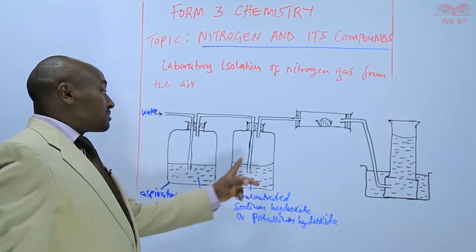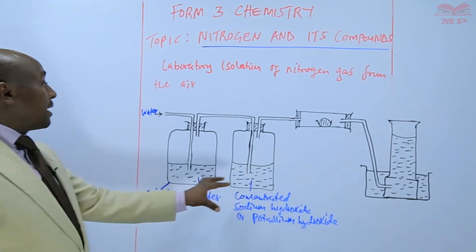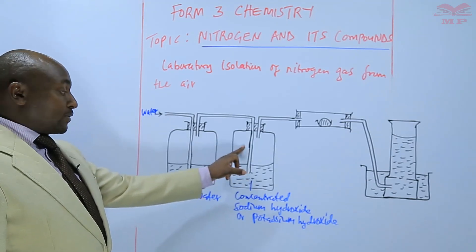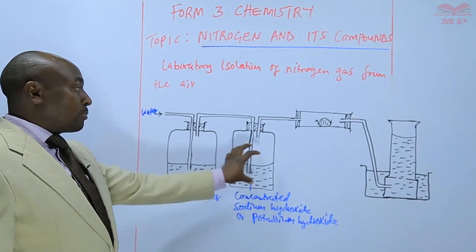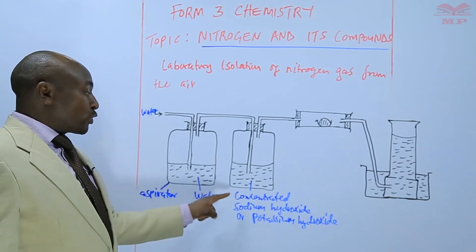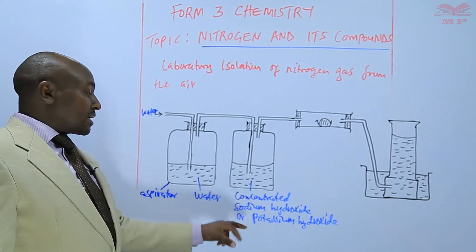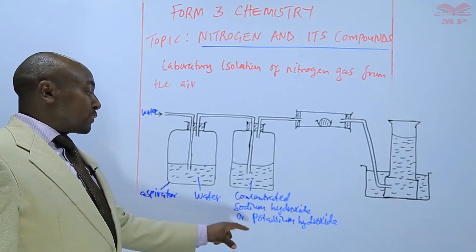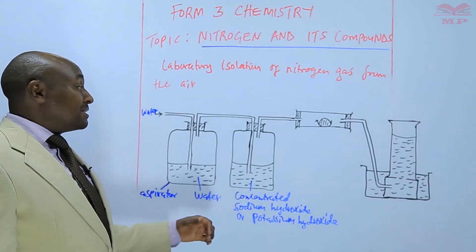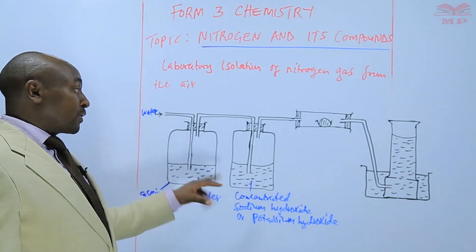The work of this particular chamber is to absorb any carbon dioxide that is in the air, so the carbon dioxide is absorbed at this point. The reason for that is because sodium hydroxide and potassium hydroxide are strong bases, and therefore they can easily absorb an acidic gas such as carbon dioxide.